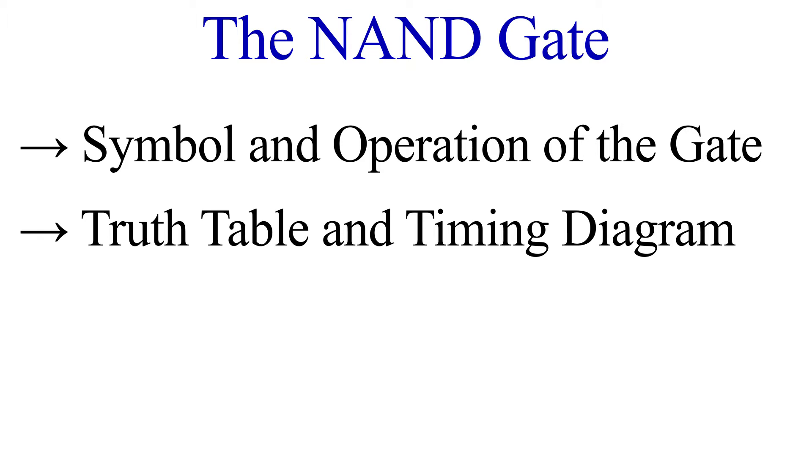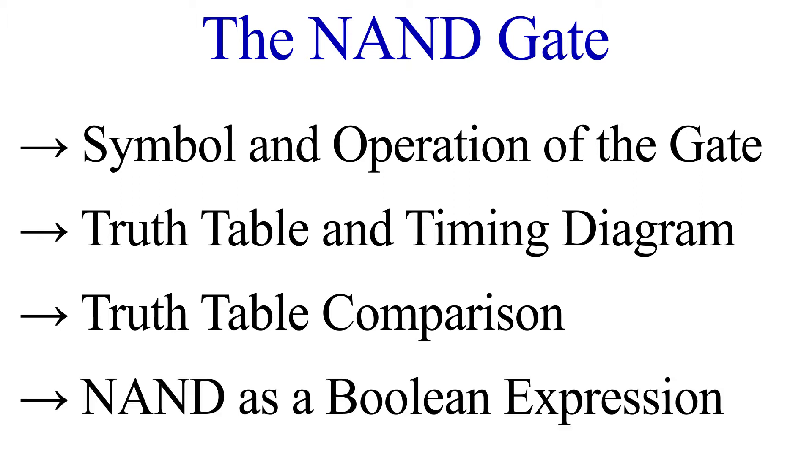Next we'll look at its truth table and timing diagram. Then before looking at its boolean algebra use, we will compare the NAND gate to a gate configuration with an identical truth table but with a different purpose. We will end on the boolean algebra use of the NAND. So let's start with the symbol and its function.